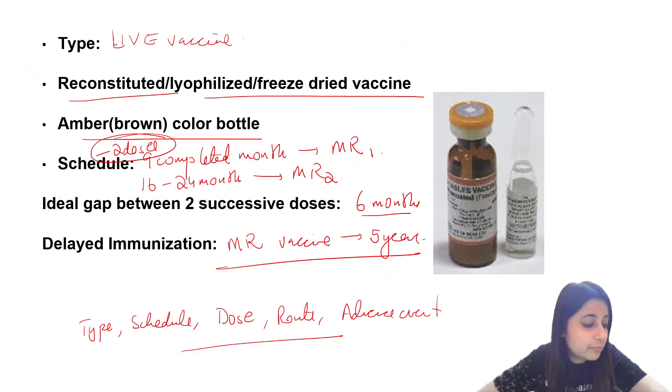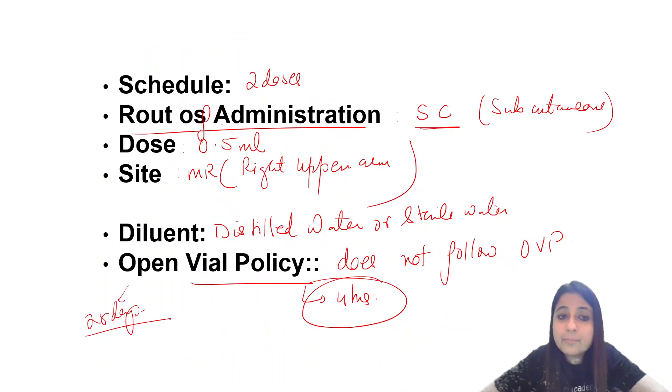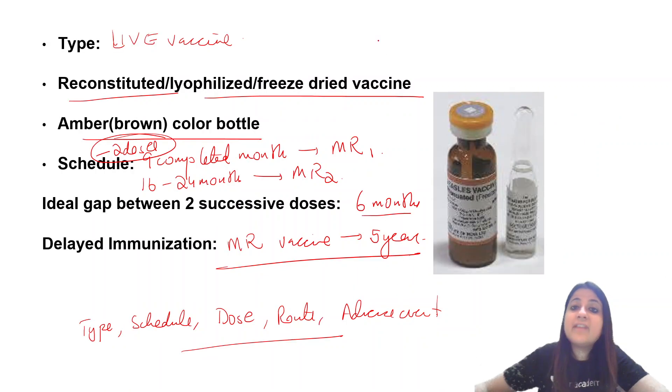This is measles vaccine, now given as Measles-Rubella. The first dose is at nine completed months. It's a live vaccine, does not follow open vial policy, must be used within four hours. The diluent is distilled or sterile water.